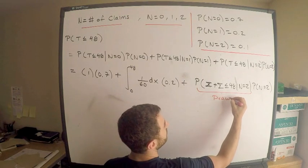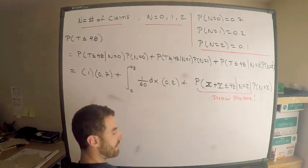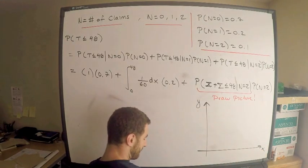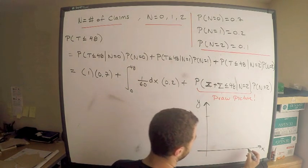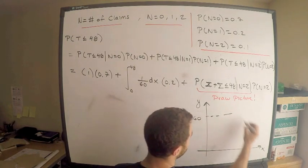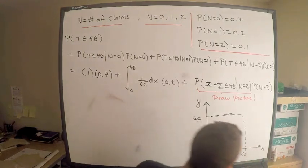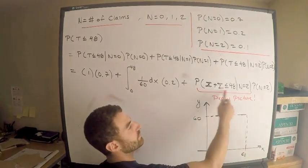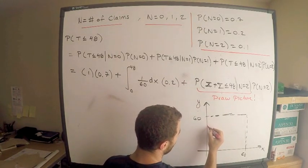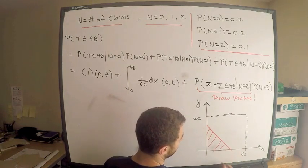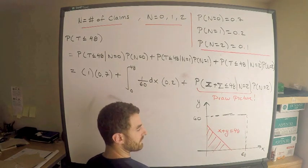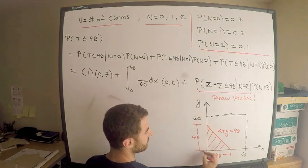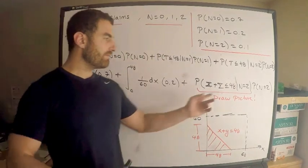I mean, you could do a double integral if you want, but why? This is a uniform distribution. Might as well have a picture. It's not too bad. Here is my quick sketch. I have X, I have Y, and X and Y both go to 60. Let's go out to 60, 50, 60, and 60, and 60. Let's do this. It's actually going to be a square here. Let's make a square. And we want X plus Y less than or equal to 48. Here's the line X plus Y equals 48. I want it to be less than that.